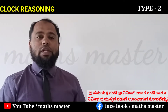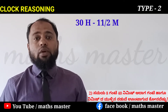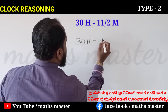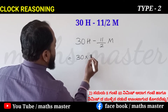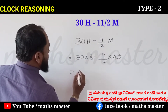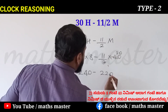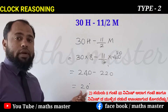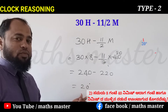The formula is 30H minus 11 upon 2M. So 30 into 8 is the hour, minus 11 by 2 into 40 minutes. The angle made by the hour and minute hand at 8:40 is 20 degrees. It is a very simple concept.